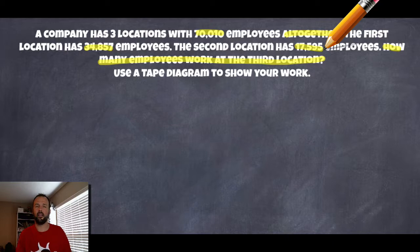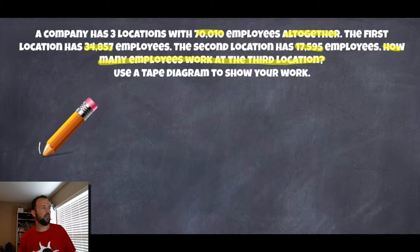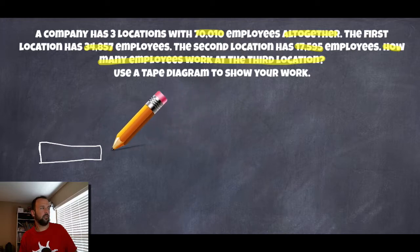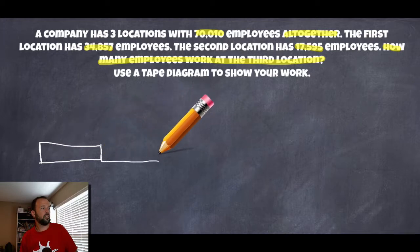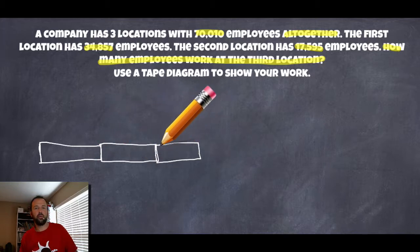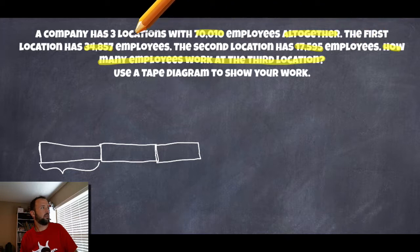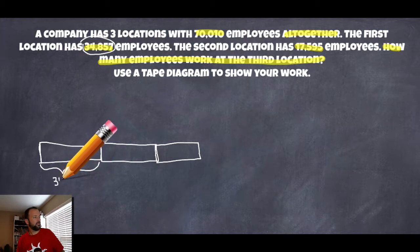I'm going to start mine and then we'll come back together. The way I would start: this company has three locations, so I'm going to draw a rectangle for location one, draw the second location next to it, and draw the third one in as well. Yours might look a little different than mine, and that's okay, as long as we're both getting to the same place. So according to the problem, the first location has 34,857 employees.